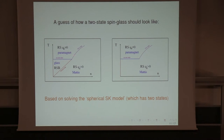Now we are in the T-N plane, and I have to try to guess what the droplet scenario would say about it. The T vs. replica number — actually it's a quotient of two temperatures, remember you don't need replicas for this — has three phases: a replica symmetry breaking one, a paramagnet one, and a MATIS one. You will see why I call it MATIS. I have to try to guess what a droplet model would say about that.